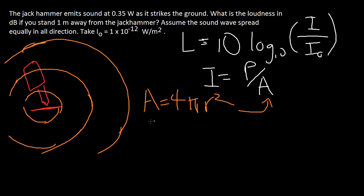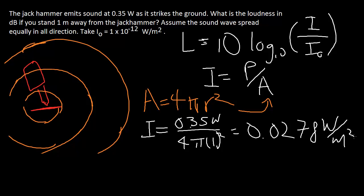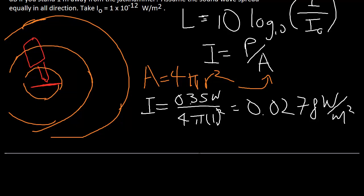Plugging everything in, we have I = 0.35 W divided by 4π(1 m)², which gives us 0.0278 watts per meter squared.